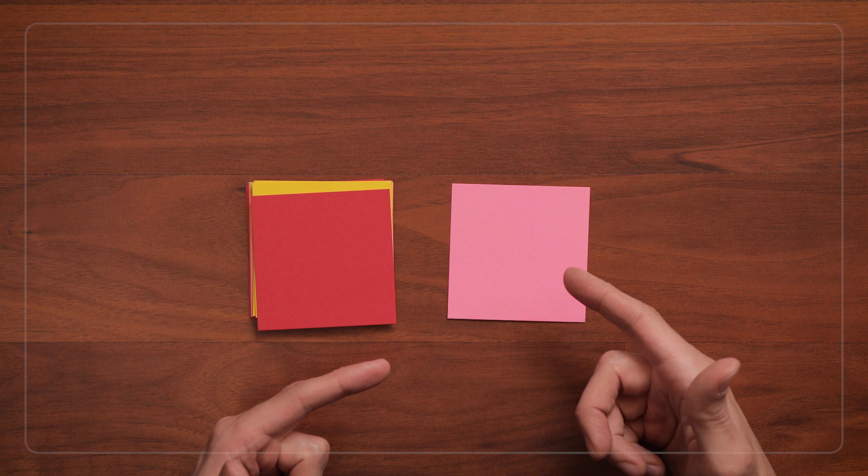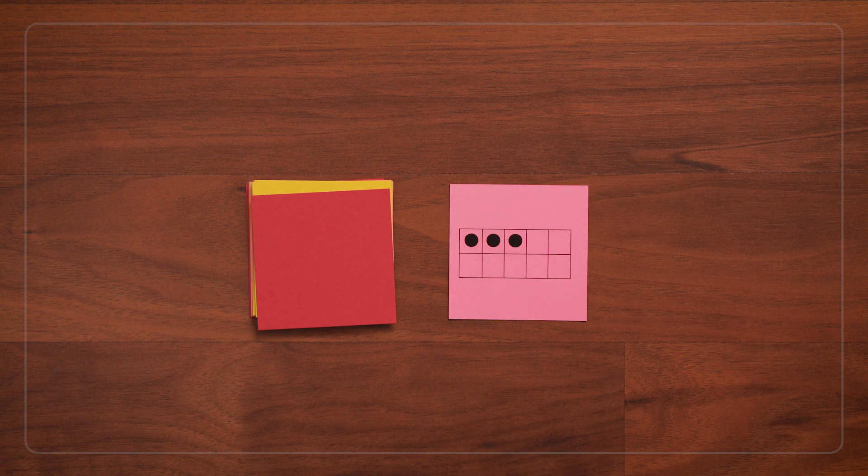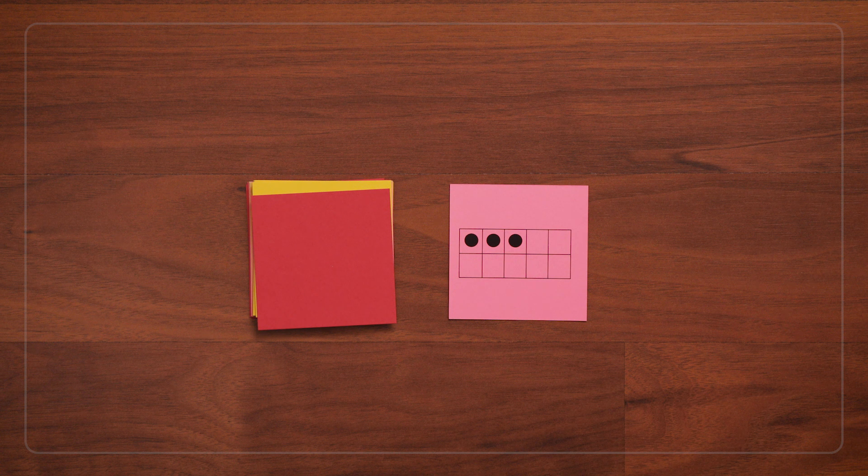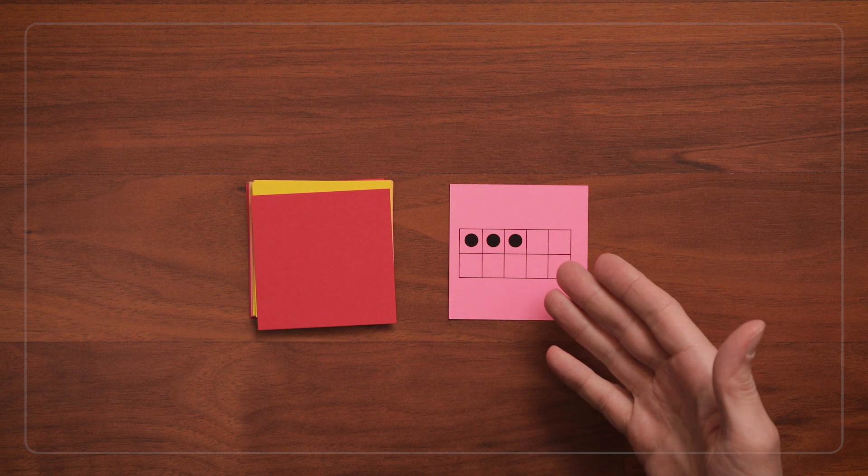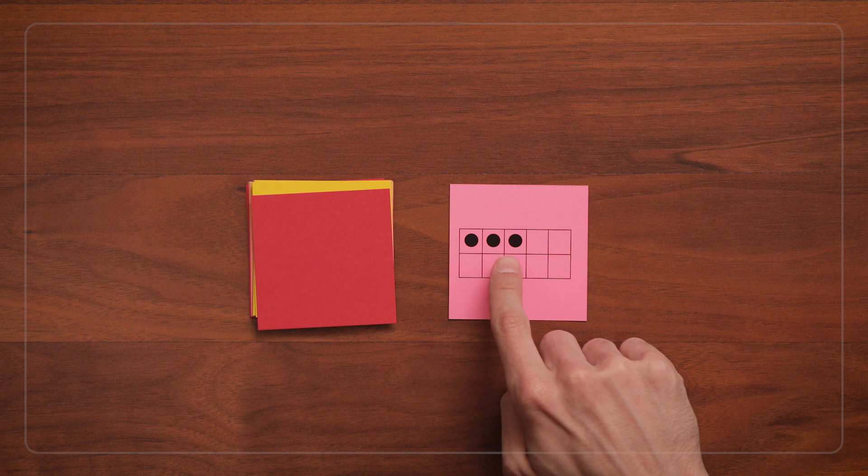Other times they might not be sure how many. You can turn the card back over and say, let's figure it out. How many dots do you see? Now that they're seeing the card with more time, they might know how many, or they might count the dots one by one.